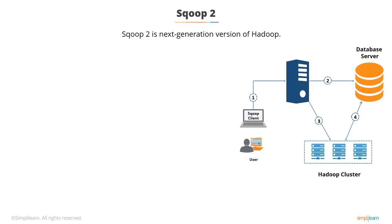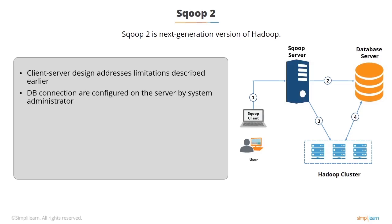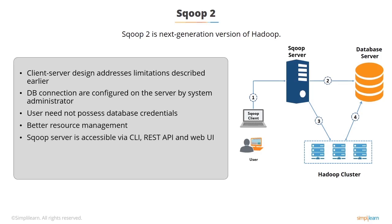Sqoop 2 is the next generation version of Sqoop with the following advanced features. Client-server design addresses the limitations described earlier. API changes also simplify development of other Sqoop connectors. Client requires connectivity only to the Sqoop server. Database connections are configured on the server by a system administrator. End users no longer need to possess database credentials. It provides centralized audit trail, better resource management, and the Sqoop server is accessible via CLI, REST API, and Web UI.